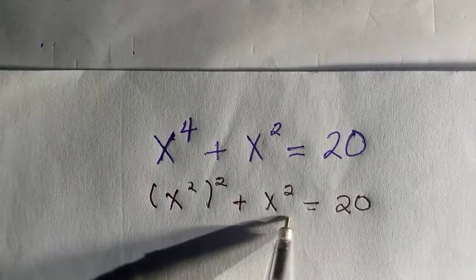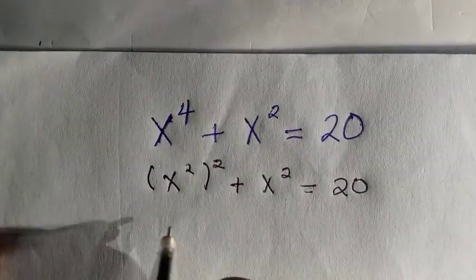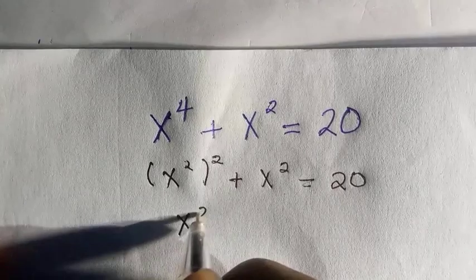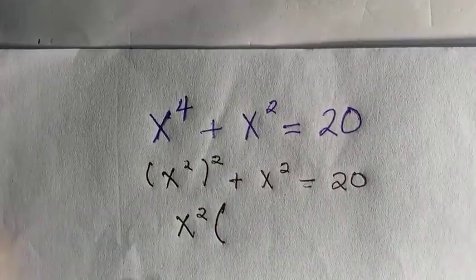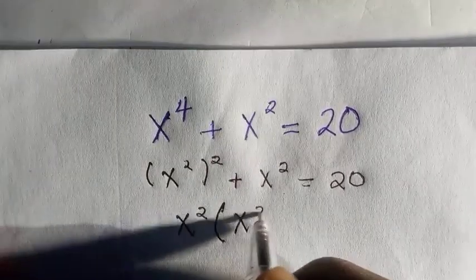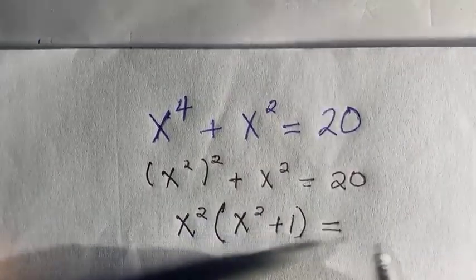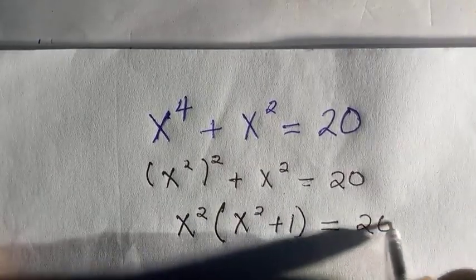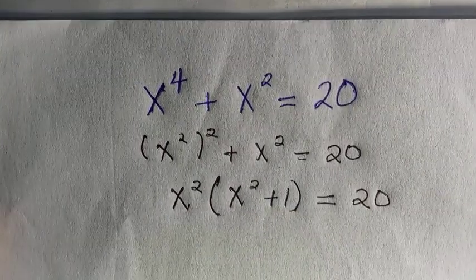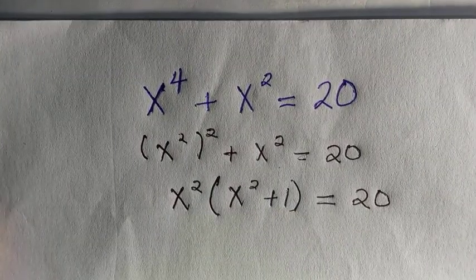We have to take x raised to power 2 common by factorizing. We have x raised to power 2 in brackets, we have x raised to power 2 plus 1, everything equals 20.